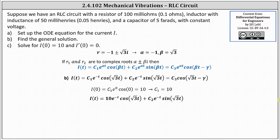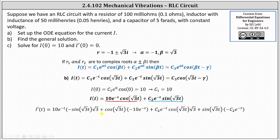Before we use I'(0) equals zero to determine c₂, we need to find I'(t), which requires quite a bit of work. We need to apply the product and chain rule to find the derivative of the first term, and then the product and chain rule again for the second term. You may want to pause the video and verify this is the correct derivative. Because I'(0) equals zero, we substitute zero for t and set it equal to zero.